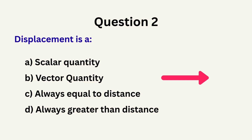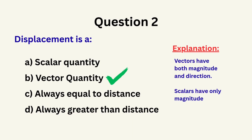Question 2: Displacement is... A. A scalar quantity, B. A vector quantity, C. Always equal to distance, D. Always greater than distance. The correct answer is B: vector quantity.